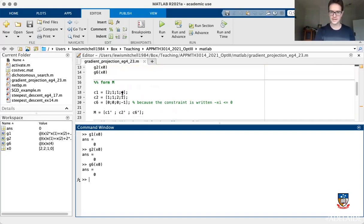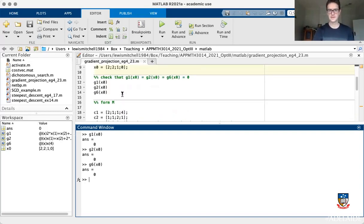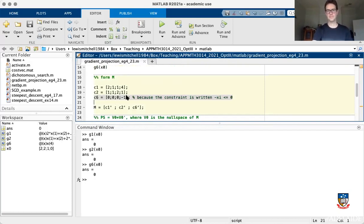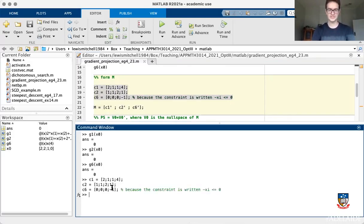So we can calculate the gradient of these constraints. So we need to differentiate G1, G2 and G6. So G6, if you differentiate it, remember that constraint in standard form is that negative X4 is less than or equal to zero. And so you differentiate that and you get the vector 0, 0, 0, negative 1. You get the vectors 2, 1, 1, 4 and 1, 1, 2, 1 when you differentiate the other two. So we'll just copy paste those in and we'll store those vectors.